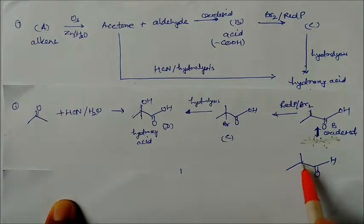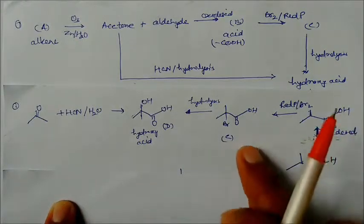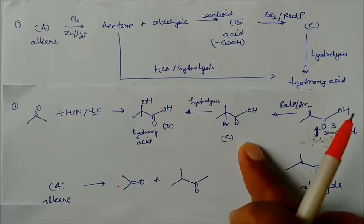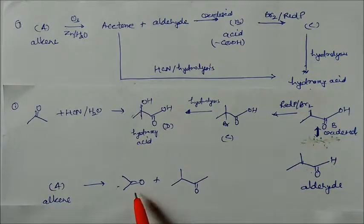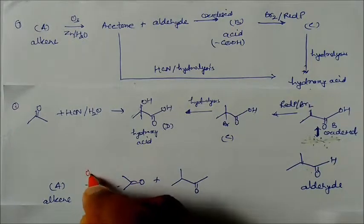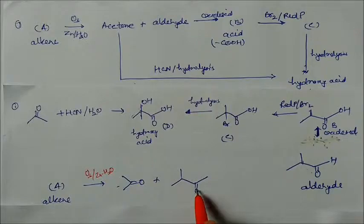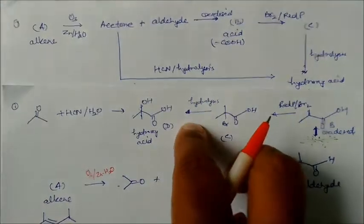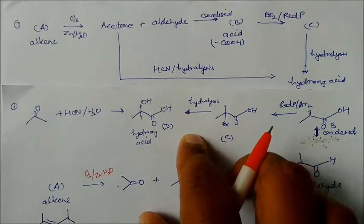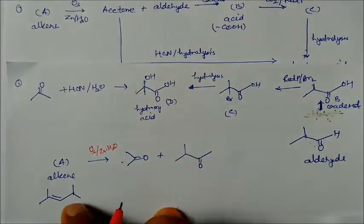We have two products: aldehyde and acetone. Taking acetone plus this aldehyde, this is an alkene — this is an ozonolysis reaction. In presence of ozone these two carbonyl compounds combine together and we get the final alkene product.